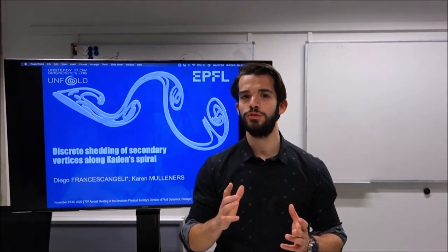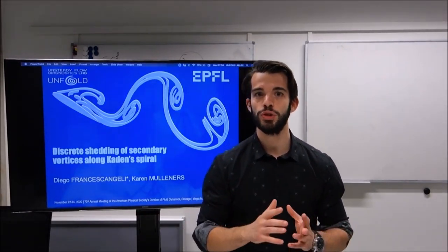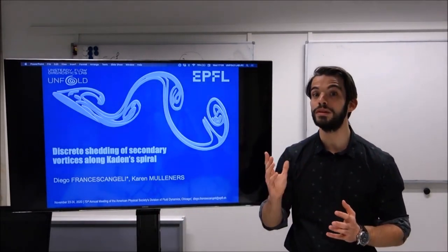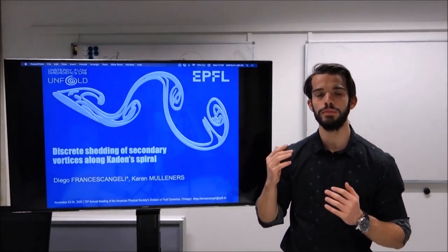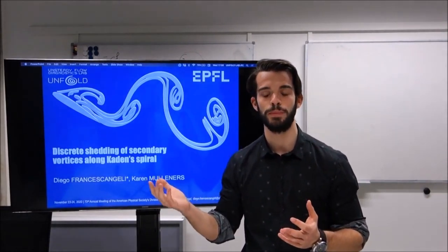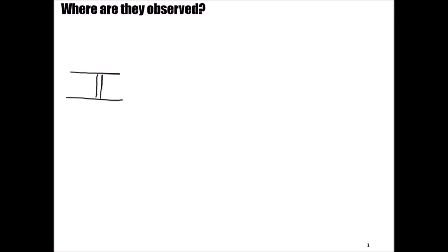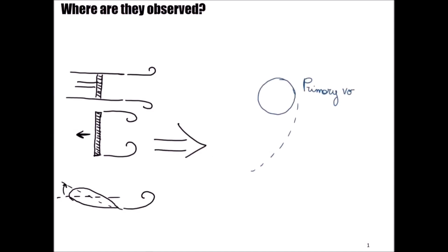You may not be familiar with vortex dynamics in general, so let me first show you what we mean by secondary vortices and where we can observe them. There are many configurations studied in vortex dynamics which involve the formation of vortices, and in many of them the pattern can be described as the formation of first, a primary vortex, followed by the formation of many other smaller vortices, and we refer to them as secondary vortices.